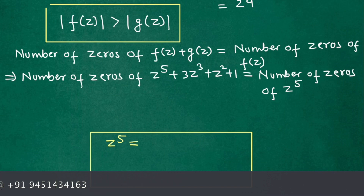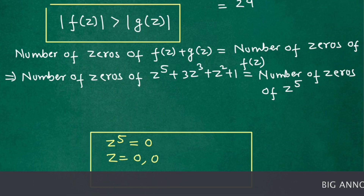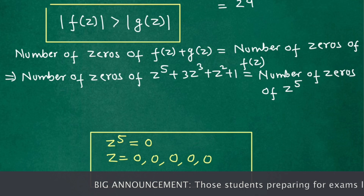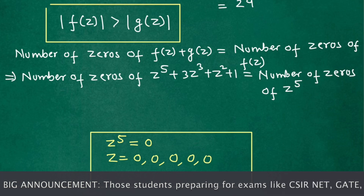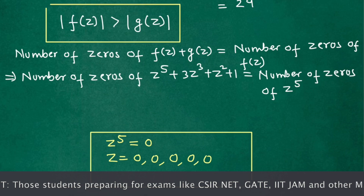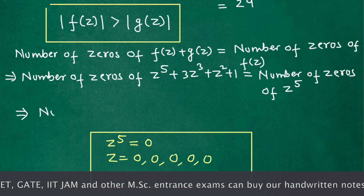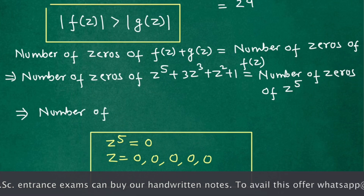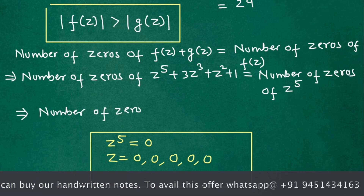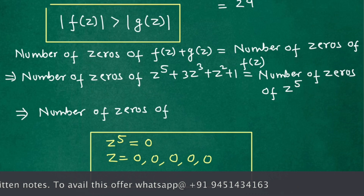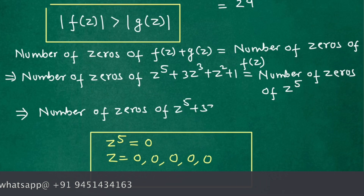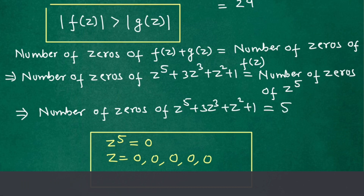Setting z⁵ = 0, the only zero is z = 0, with multiplicity 5. So there are five zeros counting multiplicities. Therefore, we can conclude that the number of zeros of z⁵ + 3z³ + z² + 1 inside |z| = 2 equals 5.